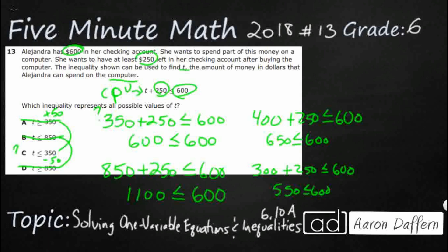Let's see if we can double check by the other way we can use to solve it. And that's by using the properties of equations and inequalities in algebra. So let's take our full inequality here. T plus $250 less than or equal to $600.